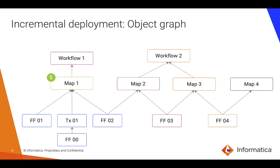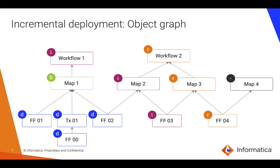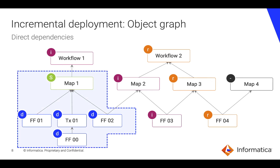Now let's look at what happens when you have a mixed load of mappings and workflows and you're partially deploying an application. For example, you as a user have selected map one — this is what we call a selected object. A selected object always has several dependencies: some are direct and some are indirect. Map one itself contains a source ff01, a flat file 01, a bunch of transformations, and a target ff02. Some of those transformations such as lookup may have references to additional data objects. All of these which are part of the mapping are what we call direct dependencies — these will always be deployed for a given selected object. So when you deploy map one, the transformations and data objects within that mapping are always redeployed.